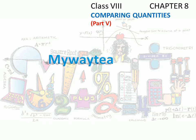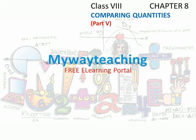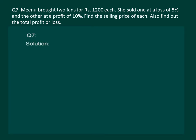This video is brought to you by mywasteaching.com. Let's read the question on the slide: Minoo bought two fans for rupees 1200 each. She sold one at a loss of 5% and the other at a profit of 10%. Find the selling price of each, and also find out the total profit or loss. We are given that the cost price of each fan is rupees 1200.